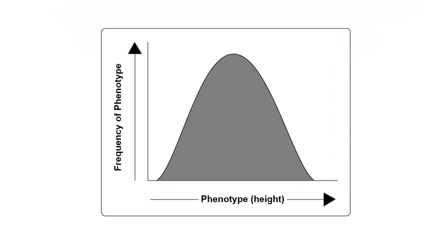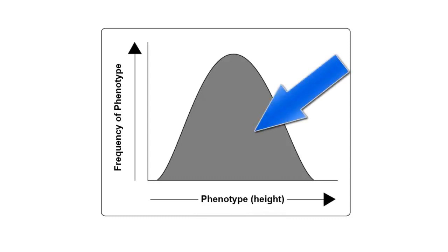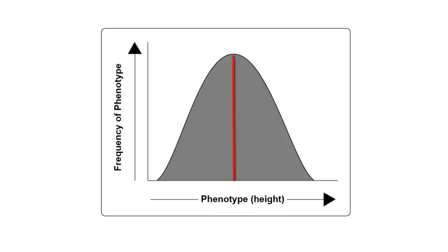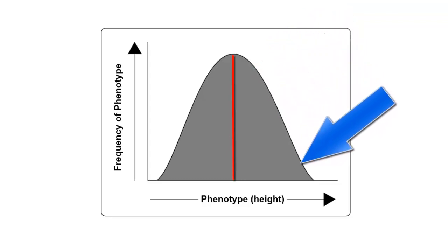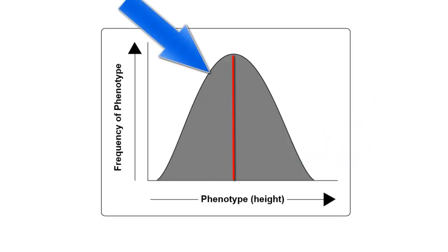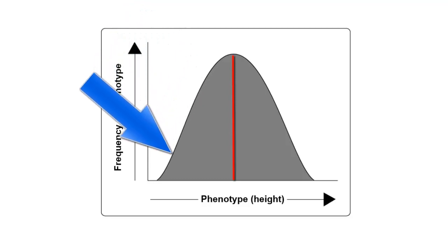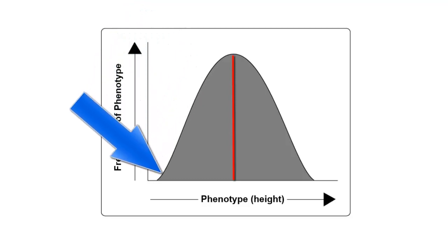In the example here, we have the phenotype height. Notice how the phenotype is distributed over a bell-shaped curve, meaning that most of the individuals have the average phenotype. If you go above average, the frequency of the phenotype drops off as the individuals get taller and taller. The same thing happens if you go below the average — the frequency drops off as you get shorter and shorter.